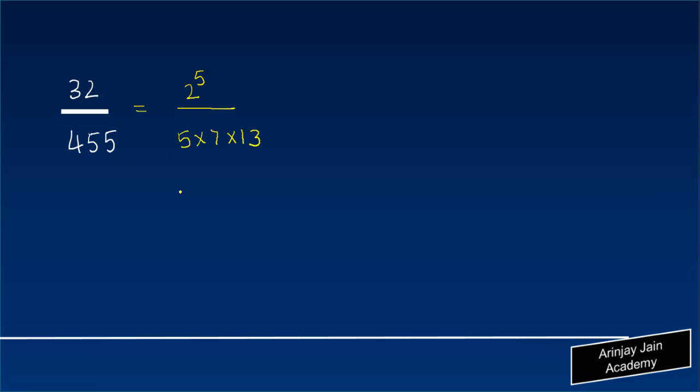Now when I look at 5 times 7 times 13, is the denominator being expressed in the form 2 to the power m into 5 to the power n? The answer is no, because this 7 and 13 is not getting cancelled out with the numerator.